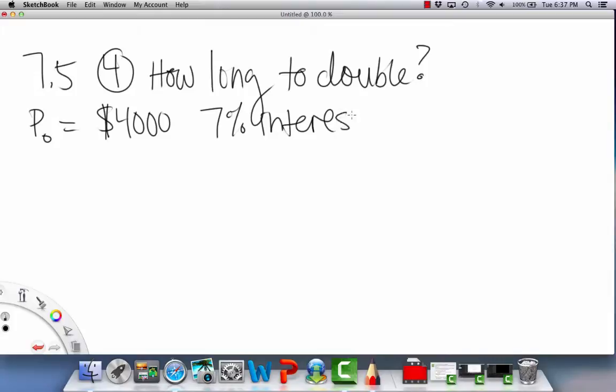And then 7% interest, and they say continuously compounded. So continuously compounded, which should trigger that we're going to use this formula that resembles exponential growth.